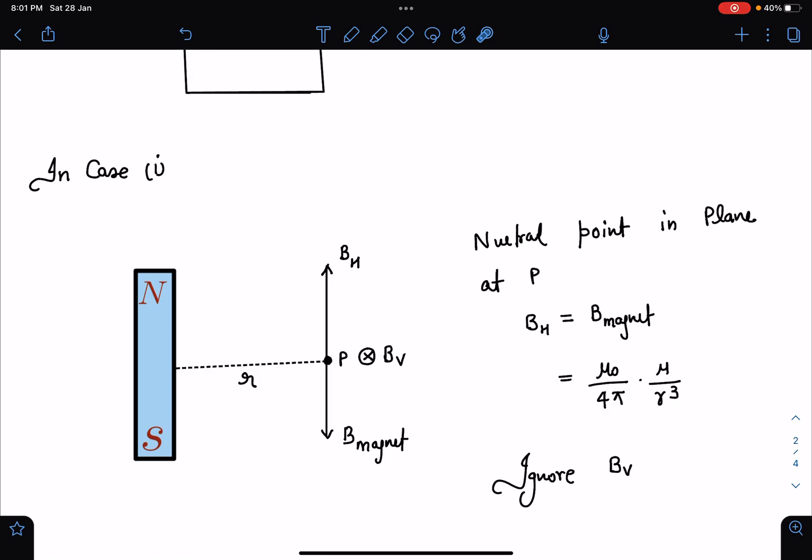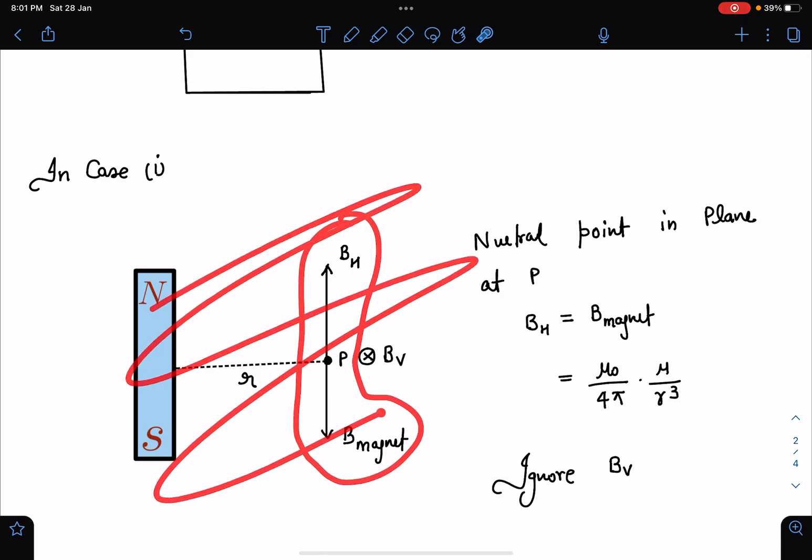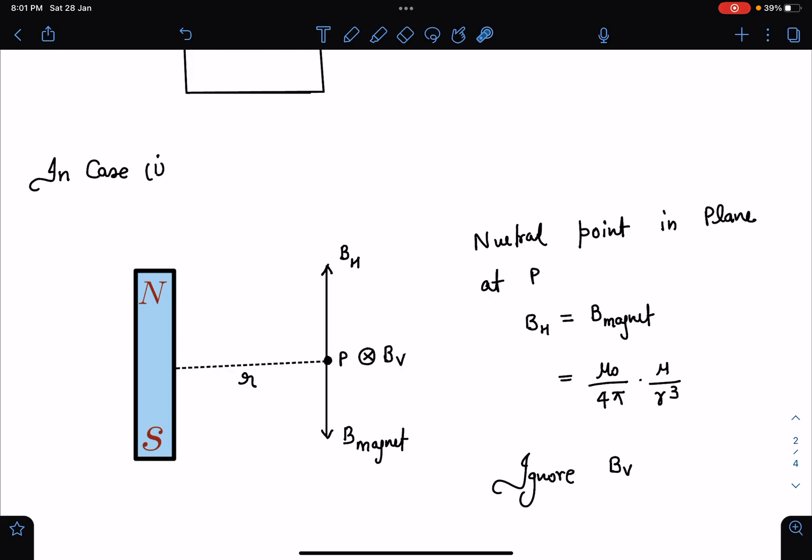And horizontal component of earth will cancel out this BH and there will be BV into the plane. Alright, so if we are talking about neutral point in the plane, in the plane of the paper, then BH must be equal to B magnet. So from here BH is equal to mu naught by 4 pi times mu by r cube, we can write. And net field at this particular point will become BV. We are ignoring it, so net field is 0 in this case.